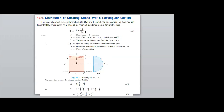For standard cross-sections, the first cross-section is a square or rectangular. Here we can see a square or rectangular whose width is B and depth is D.